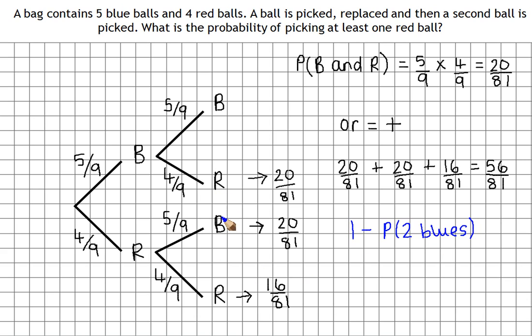Because we can have this option, this option, or this option that will pick us at least one red ball. So that would be one minus, well, the probability of two blues is five ninths times five ninths. So that's 25 over 81.